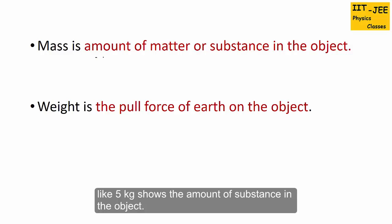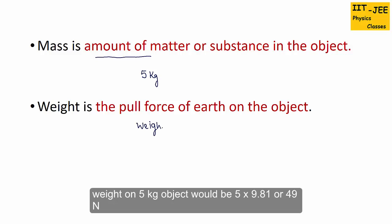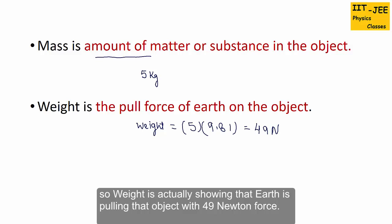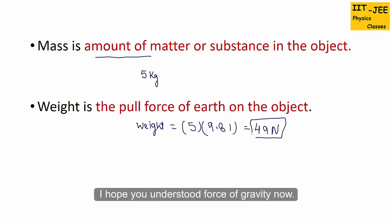So mass is the amount of matter or substance in the object. Like 5 kg shows the amount of substance in any object. While weight is the pull force of earth on that object. Weight on a 5 kg object would be 5 times 9.81 or 49 Newtons. So weight is actually showing that earth is pulling that object with 49 Newtons.